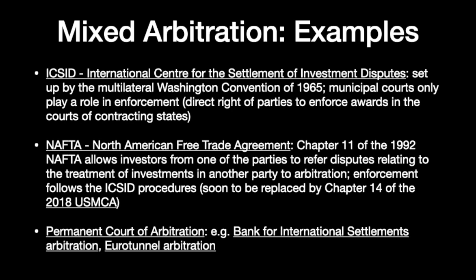NAFTA also includes Chapter 11, which allows investors from Canada, Mexico, and the United States to refer disputes on the treatment of investments in another party to arbitration. Enforcement follows the ICSID procedures. NAFTA Chapter 11 is now being replaced by Chapter 14 of the 2018 US-Mexico-Canada Agreement. The final example is the Permanent Court of Arbitration, which has been involved in significant arbitration disputes such as the Bank for International Settlements Arbitration and the Eurotunnel Arbitration. Links on the online presentation will take you to websites with a brief presentation of these examples of mixed arbitration.